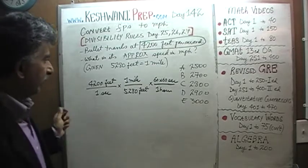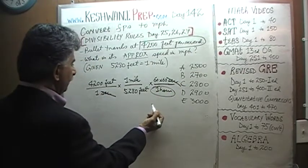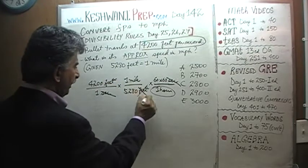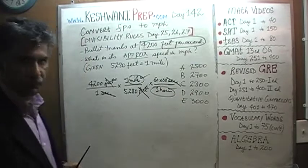So here we have second on the top, we have second at the bottom, the second is going to cross out, we end up with hour at the bottom. We have feet on the top and feet at the bottom. They're going to cross out, and we are going to end up with miles on the top, miles per hour.